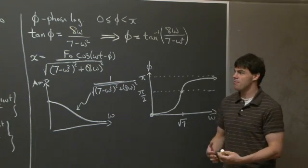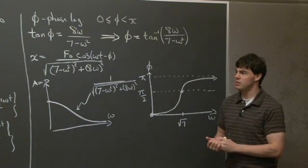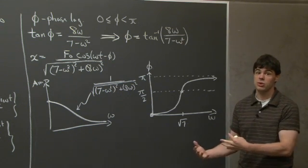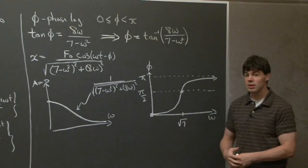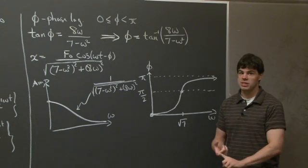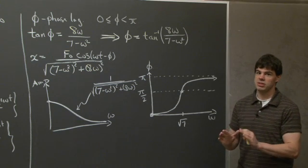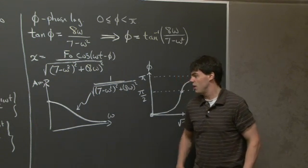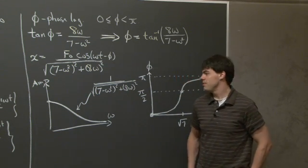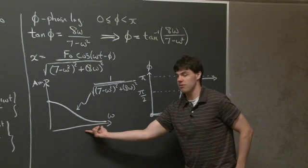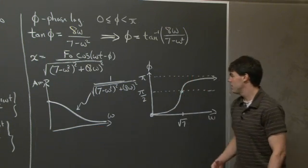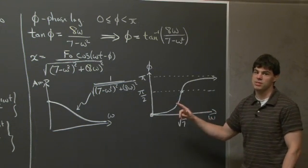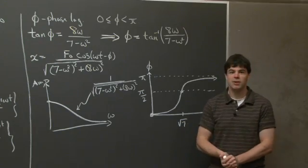To quickly recap: when we look at a particular solution to a differential equation forced by a periodic sinusoidal function, the output is always rescaled and phase shifted but still oscillates at the same frequency. Depending on which frequency the equation is forced at, the amplitude response and the phase shift will both take on different values. I'll conclude here and see you next time.